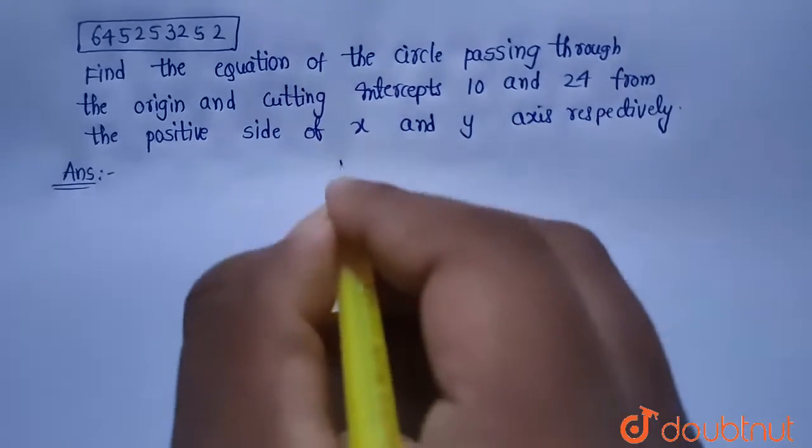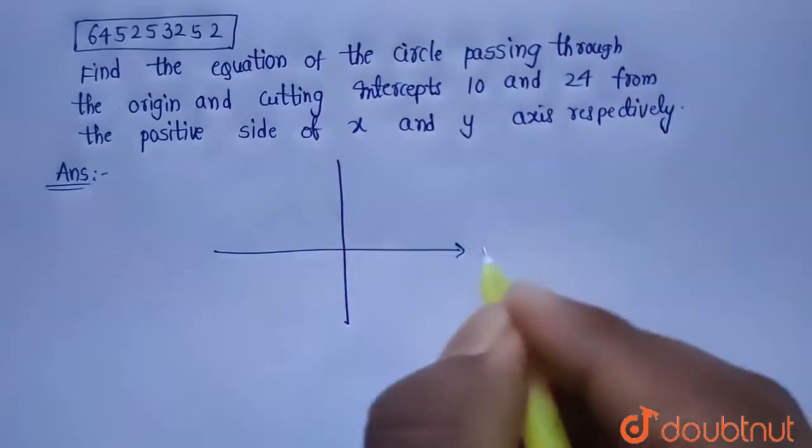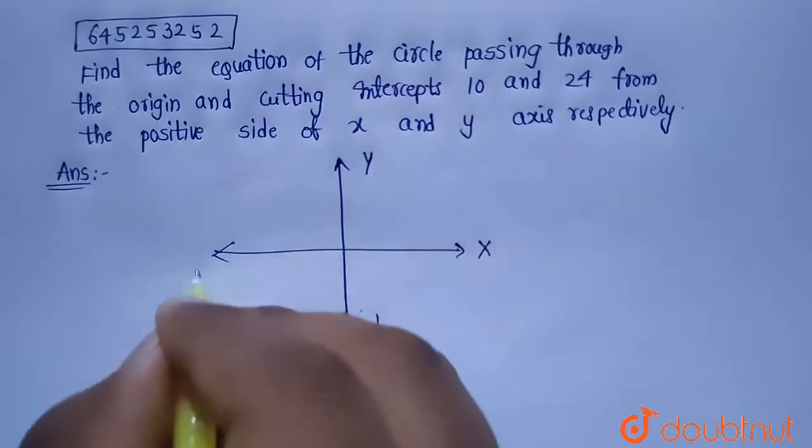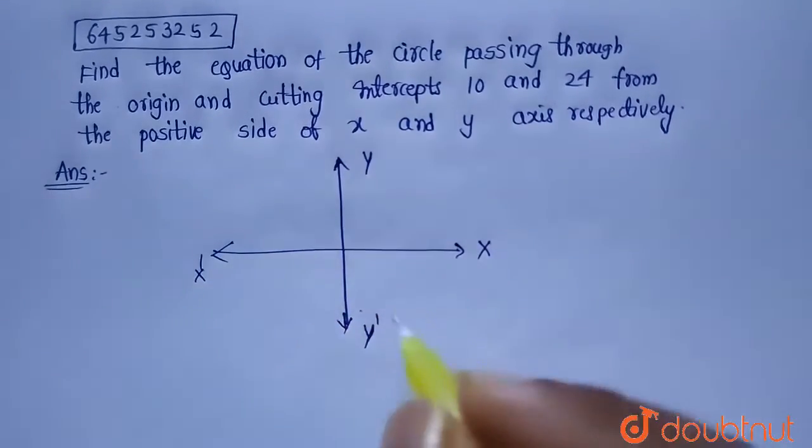Now let's draw the graph of this circle. This is x axis, this is y axis, this is negative y axis and this is positive x axis, this is negative x axis.